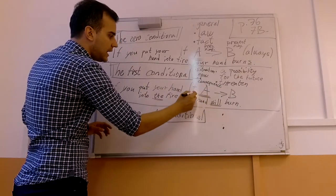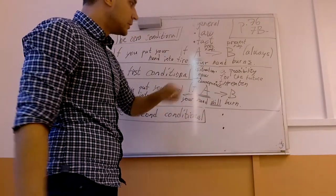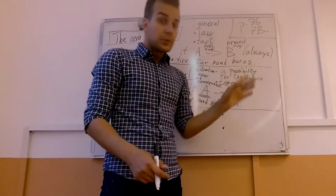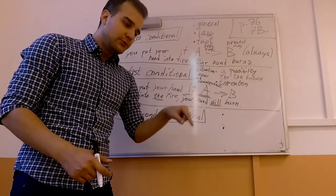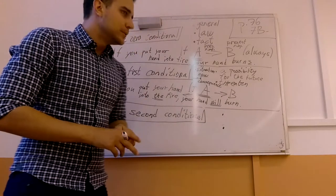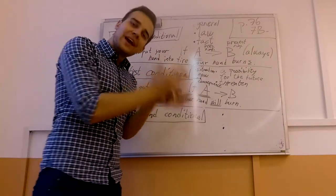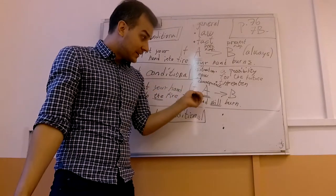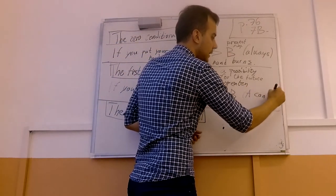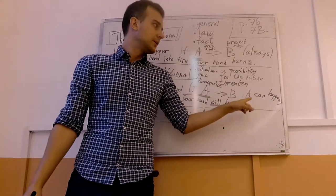So A is putting your hand into fire. If you do that, something will happen to your hand right now — that is the consequence, that is B: your hand will burn. It is a possibility. There is fire here, and if you put your hand into the fire, your hand will burn. You can also threaten: if you don't stop talking, I will put your hand into the fire. So if A happens, B will happen for sure — but A is a possibility, it can happen.